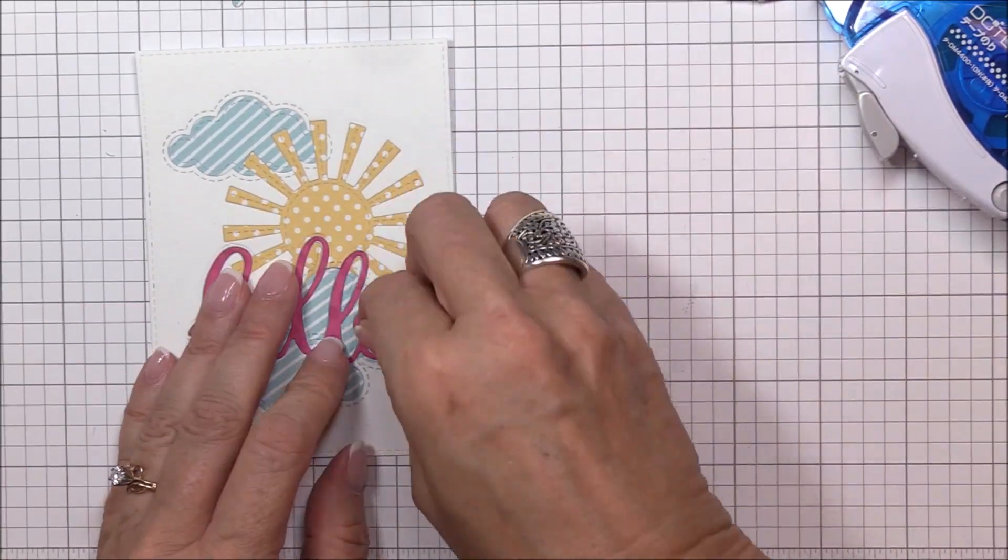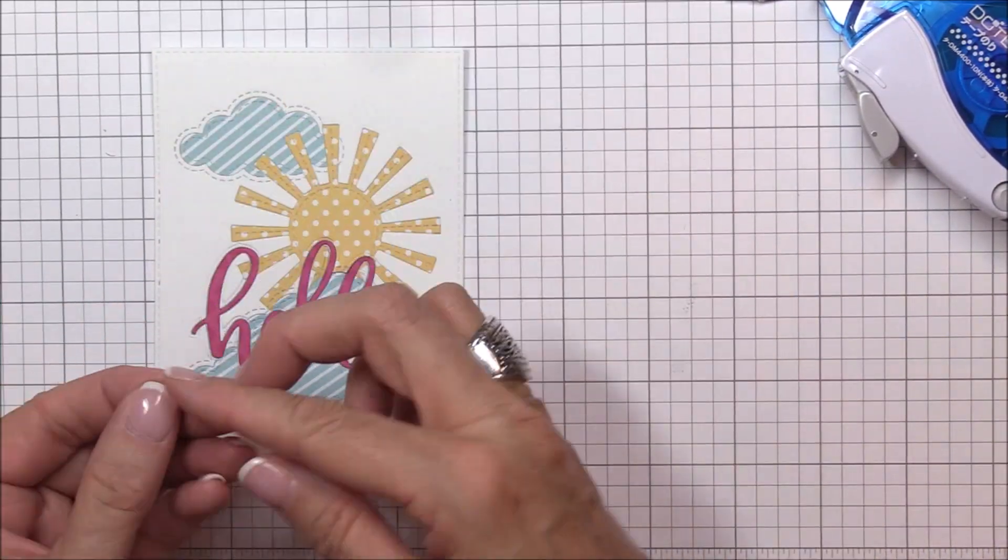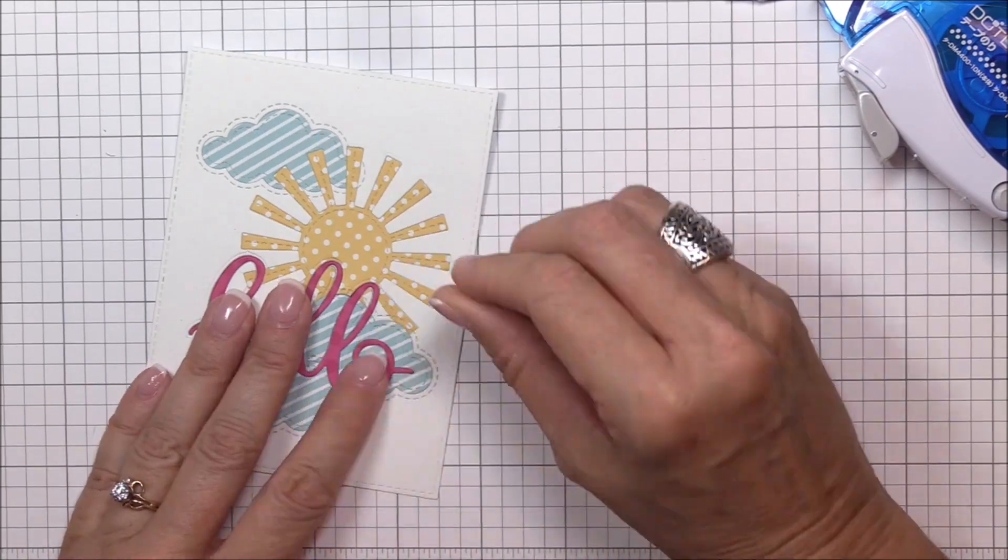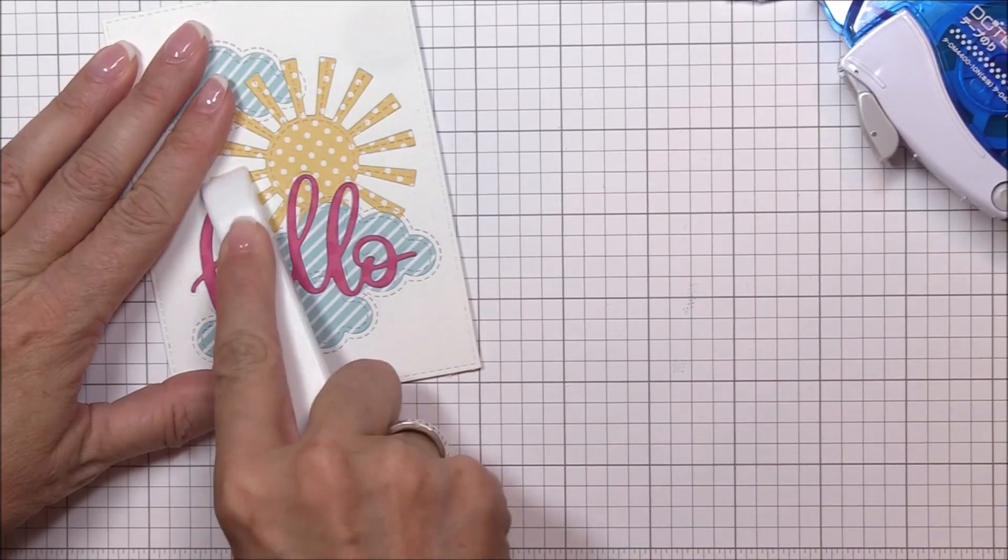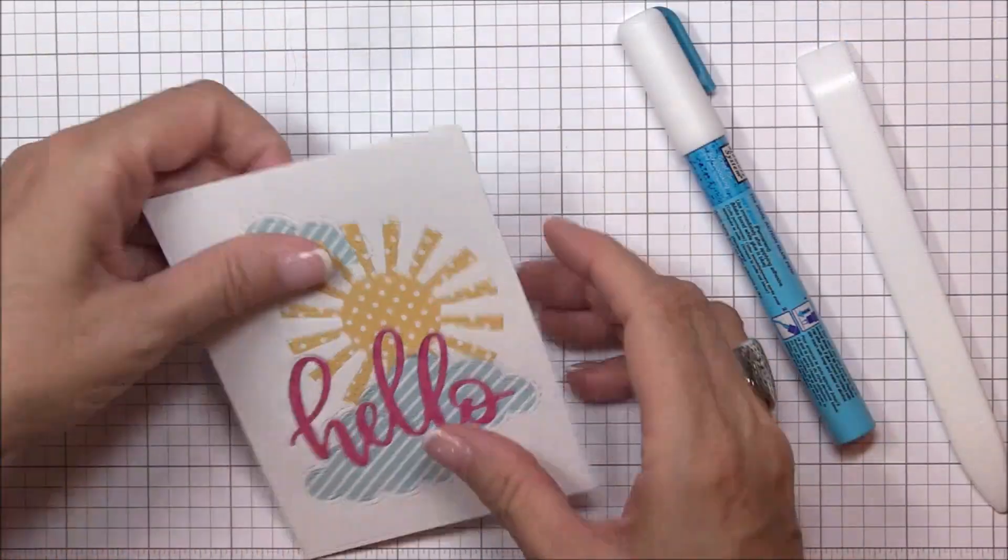Once I have those interior pieces in place, I'll use my Teflon bone folder to really burnish all of those die cut pieces and make sure that everything is laying down flat.